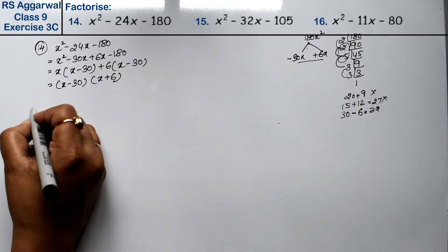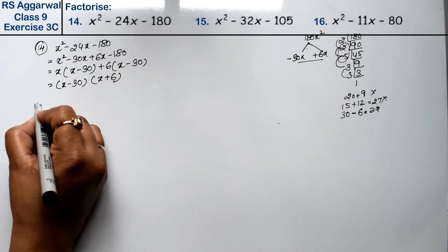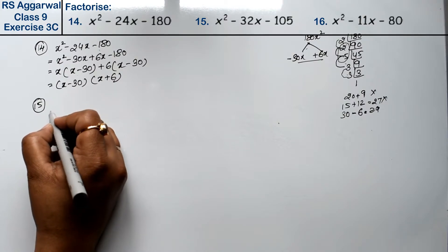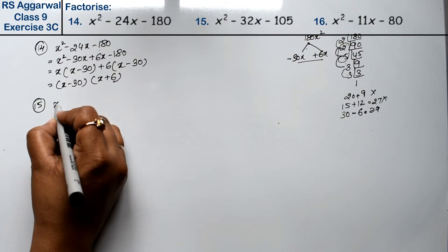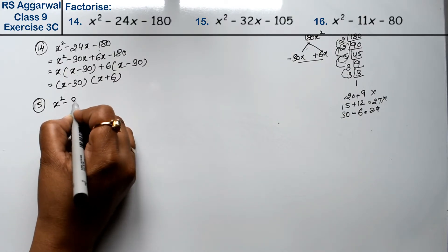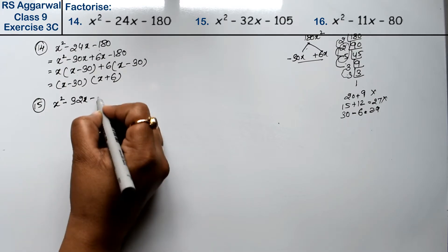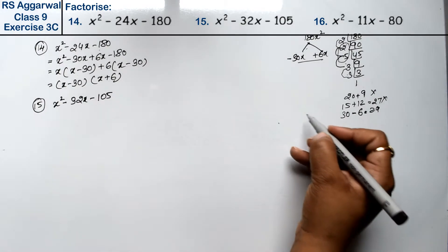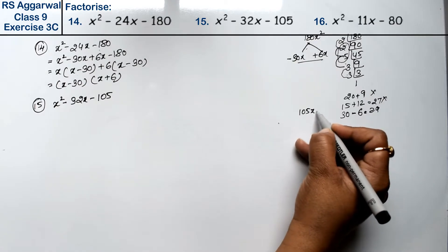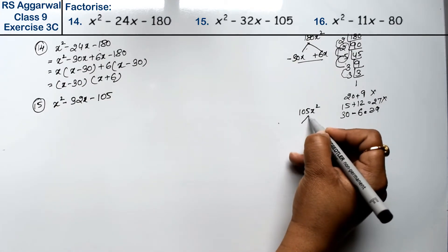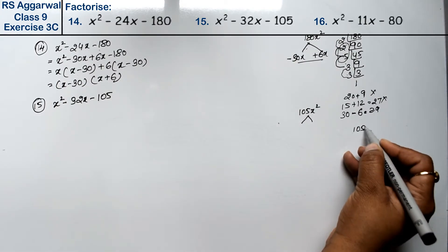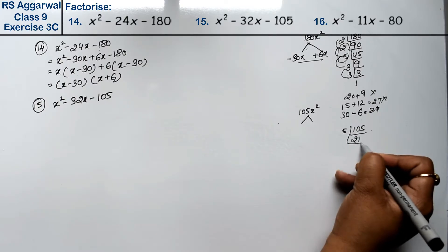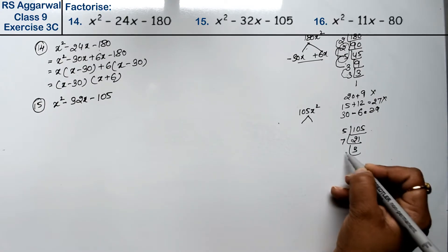Let's do question number 15. Question number 15 is x squared minus 32x minus 105. Now let's take the factors of 105: 5 ones are 5, 5 twos are 10, 7 threes are 3.